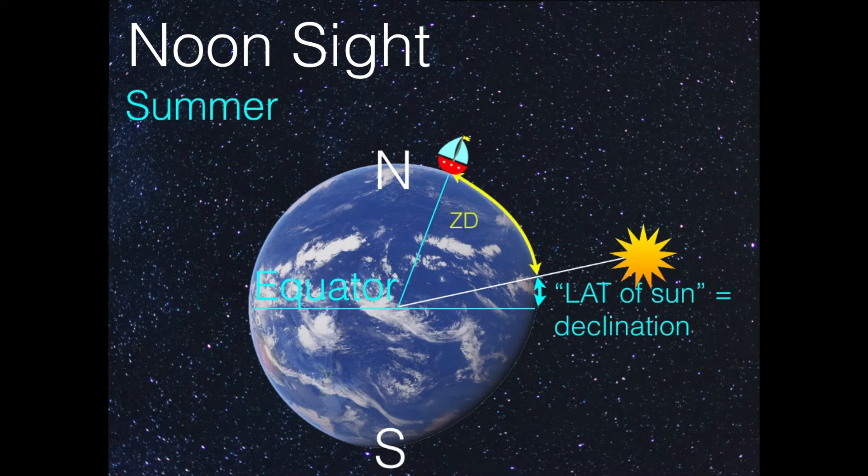But it's the same thing as before. We have the zenith distance, which is the distance between us and the sun, expressed in an angle or in nautical miles. And here we have the declination to take into consideration as well. So in summer, when the sun is on the northern hemisphere, and we are as well, we can see that the latitude is the zenith distance plus the declination. Now, if we are in the southern latitude and the sun is on the northern, or vice versa, it is a little bit different. But a small drawing on a piece of paper very soon determines how you calculate the latitude by means of the zenith distance and the sun's declination.